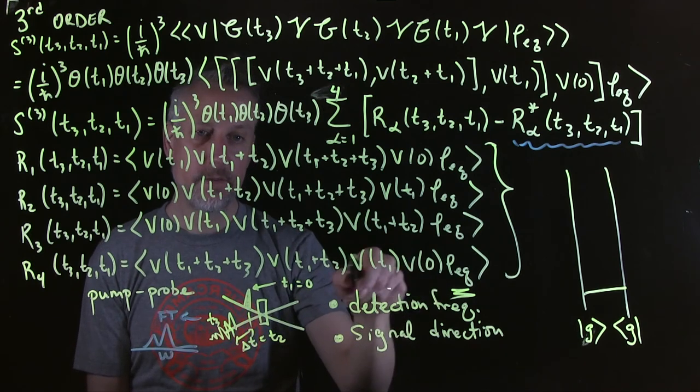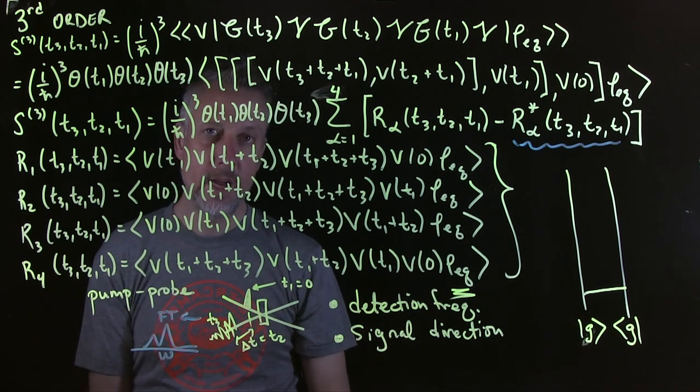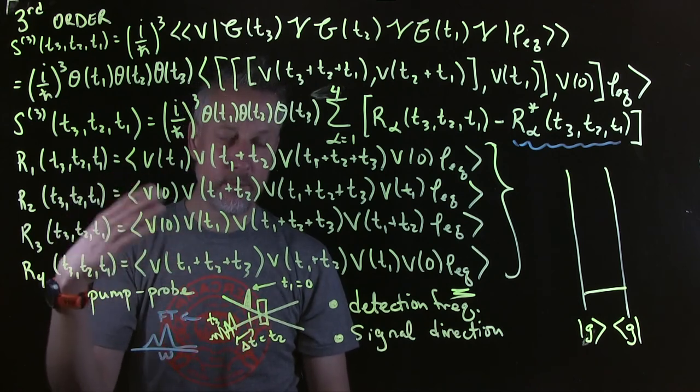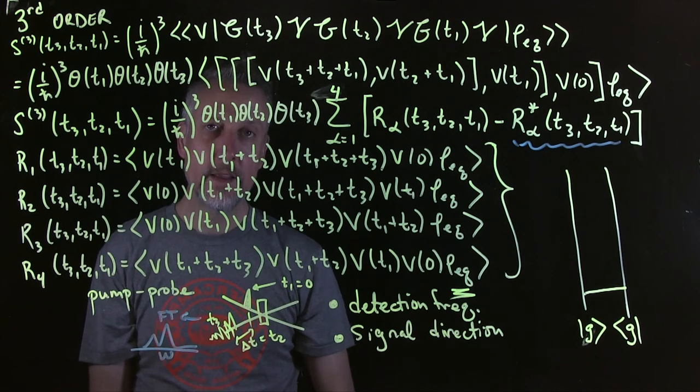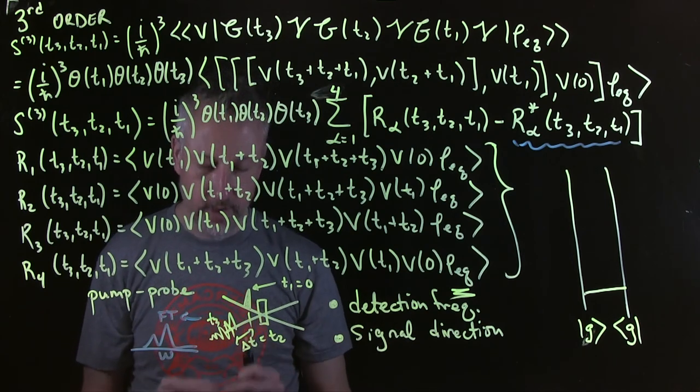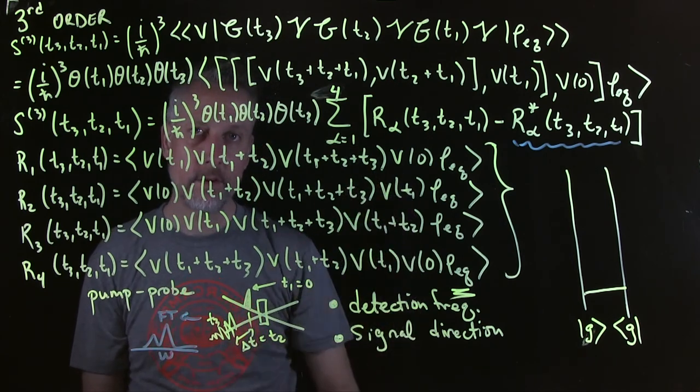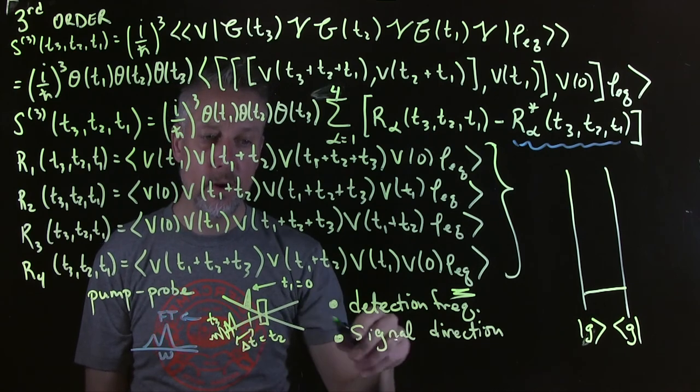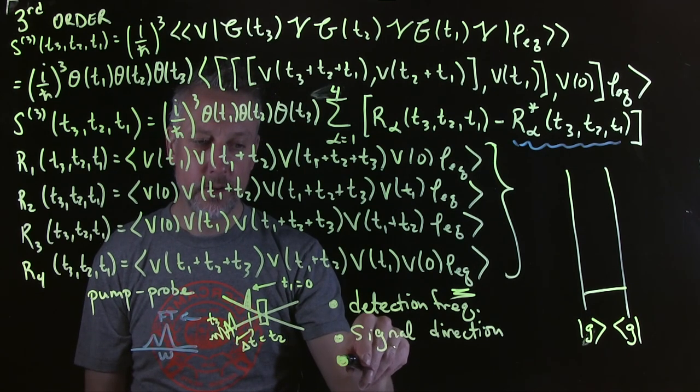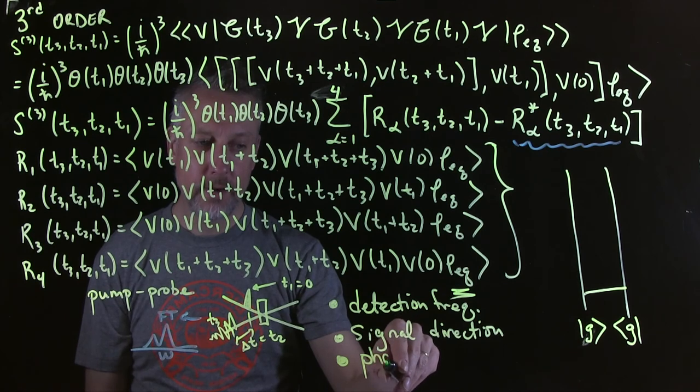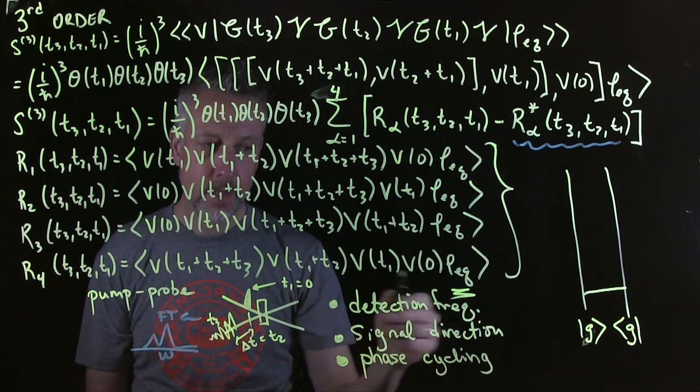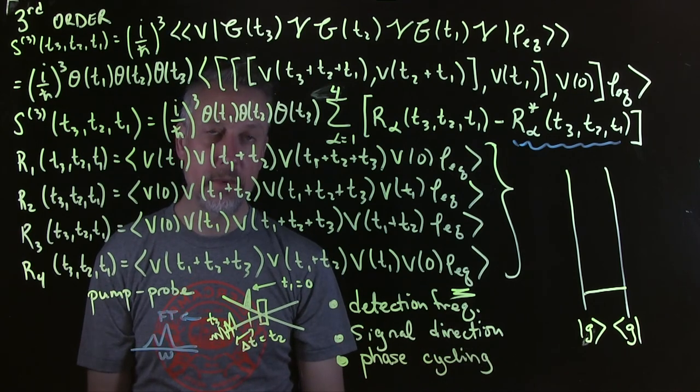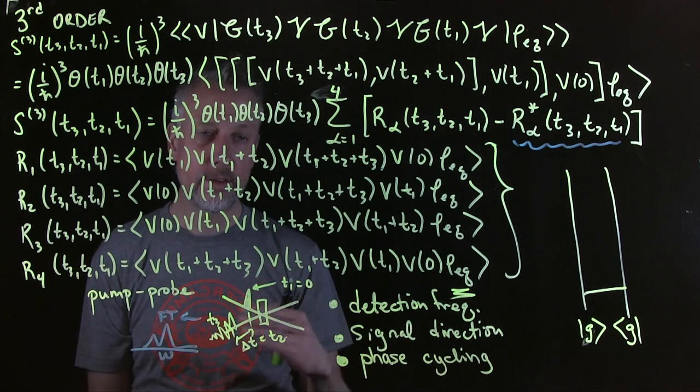A more modern way of doing this instead of using different directions is we actually have the ability to modulate the phases of these fields separately. And then by recording the signal that you're, doing the experiment multiple times, but with different relative phases between the fields, we can then add them together in an appropriate way to select out one of these different pathways or another. And in fact, that's how NMR does it. So the other term, the other way you can do it is by what's called phase cycling. So now in multi-dimensional spectroscopy, where we use optical pulse shapers, we routinely use phase cycling to select the different pathways.